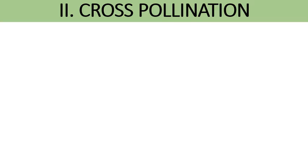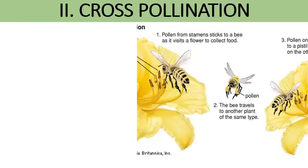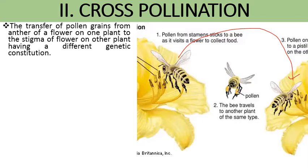What is cross pollination? The transfer of pollen grains from the anthers of one plant's flower to the stigma of another plant's flower of the same species — meaning they may have certain genetical differences. The transfer of pollen grains from the anthers of a flower on one plant to the stigma of a flower on another plant having a different genetic constitution is known as cross pollination.